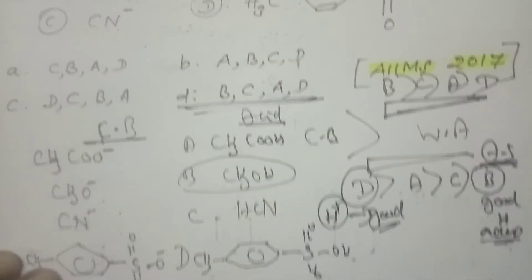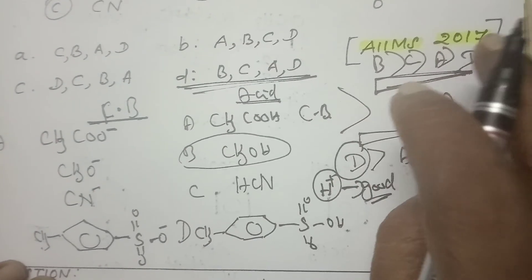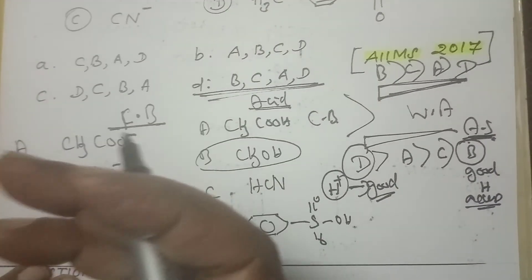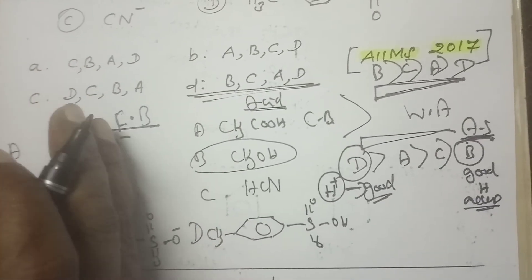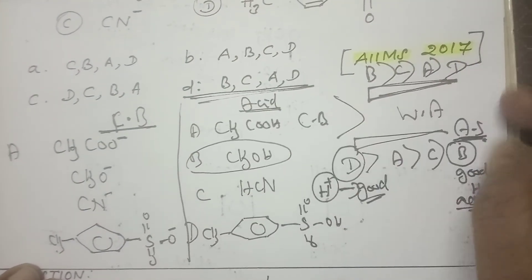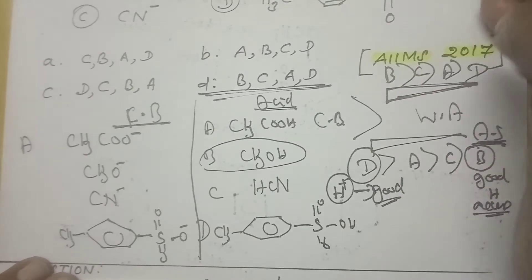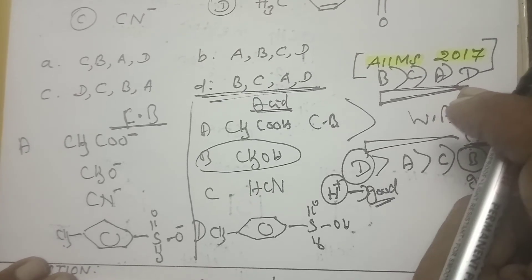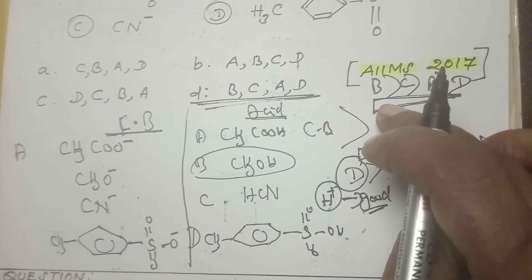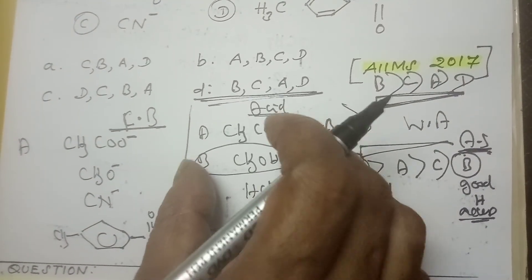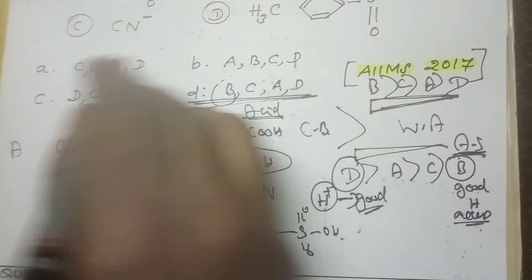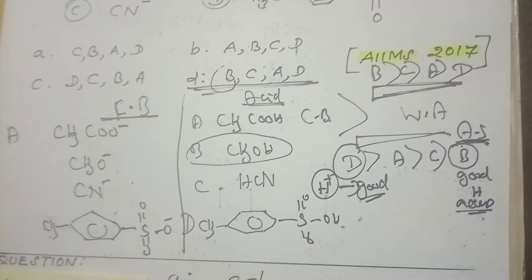AIMS 2017 questions have their own standard — a good standard question. How to approach: separate everything into conjugate base with the acid — create this tabulation. What they are asking is the decreasing order of nucleophilicity, meaning proton acceptor. Who is the best proton acceptor? Weak acid is the best proton acceptor. Among these, who is the weakest acid? B is methyl alcohol — it is not at all an acid. So B comes first. With this logic, you can easily approach.